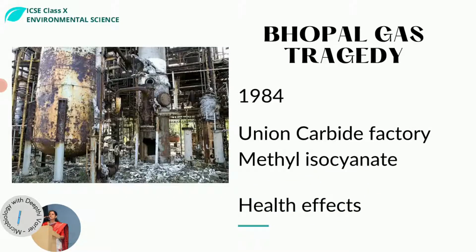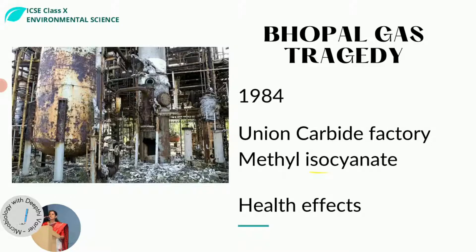This disaster is relevant to MNCs because several factors contributed to the gas leakage. The factory was located in a densely populated area. The MNC exported untested technology to the Indian plant without checking if it was secure enough. There was no action plan for incidents of this magnitude. They used methyl isocyanate — a very hazardous chemical — and stored it in large tanks instead of several smaller ones. Safety checks were infrequent due to staff shortage, and the refrigeration unit for the gas was disabled just to save money, resulting in very poor maintenance and corroded pipelines.